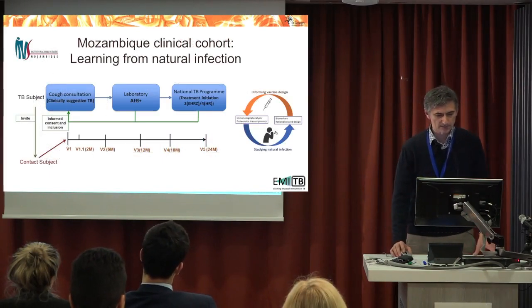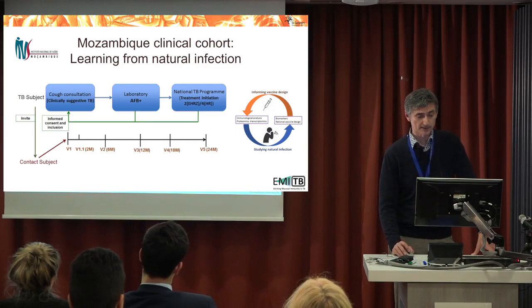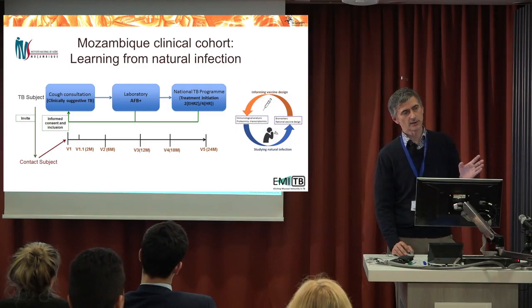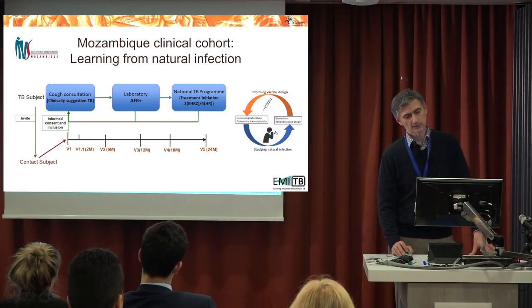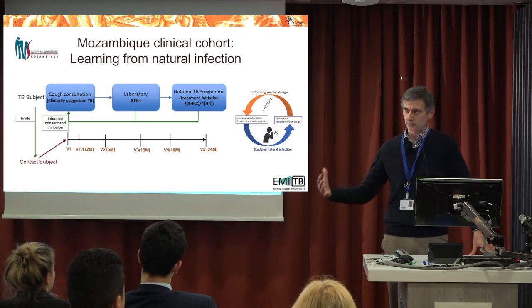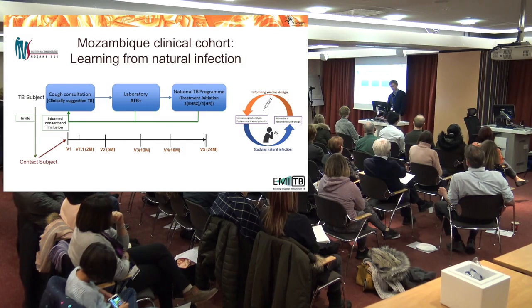We are also conducting a clinical cohort in Mozambique, studying three groups: TB patients, exposed contacts, and controls. We look at changes in their blood, sputum, and saliva in longitudinal studies with samples taken every six months. We aim to identify not just correlates of disease progression, but also correlates of protective immune responses, to refine our vaccine design in this circular approach. It is very important to involve countries like Mozambique not just as sources of clinical material, but to actively include them in research and build their research capacities.